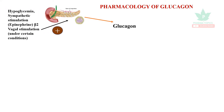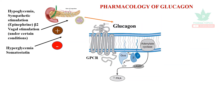The islet cells of Langerhans of the pancreas release glucagon. Hyperglycemia and somatostatin inhibit the secretion of glucagon. The released glucagon acts on target cells through a G protein-coupled receptor system.